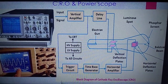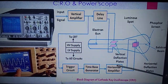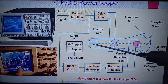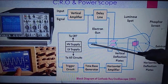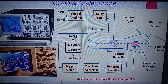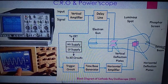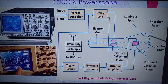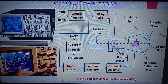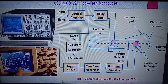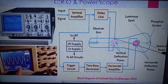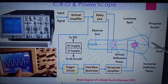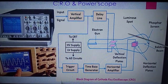The cathode ray tube is mainly constructed with vertical deflection plates and horizontal deflection plates. There is an electron gun which emits a beam of electrons, and a phosphor screen which is coated with a luminous material like phosphor. Whenever the electron beam bombards on this phosphor screen, the particular bombarding spot gets illuminated. Its intensity can be controlled with the intensity control and its focus with the focus control.